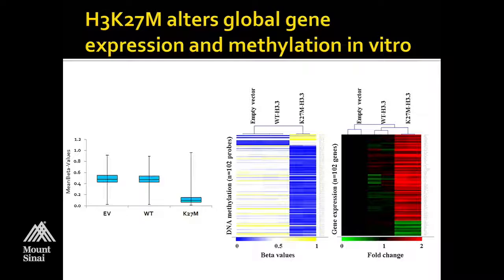The blue regions being hypomethylated are highly associated with the presence of this histone mutation. If we look at the level of gene expression, we see that there's a huge increase in gene expression in cells when you've added this mutated lysine 27.